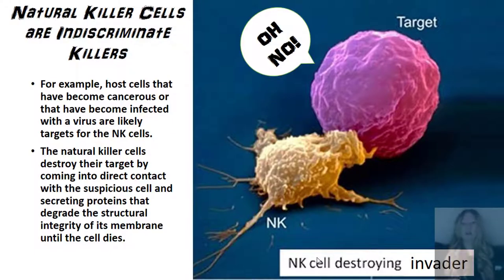For example, host cells that have become cancerous or have become infected with a virus are likely targets for these NK cells. The natural killer cells destroy their targets by coming into direct contact with these suspicious cells, then they secrete proteins that will degrade the structural integrity of the membrane until the cell dies.